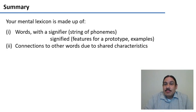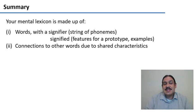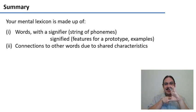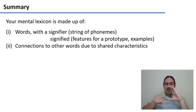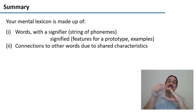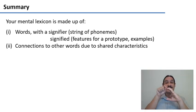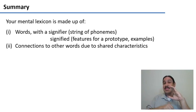What you have in your brain for words is called a mental lexicon. It's made up of words with a signifier and a signified, and their connection to other words with which they might share some characteristics — like being synonyms, antonyms, hypernyms, and many others.